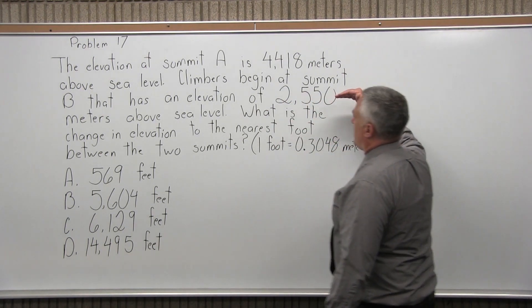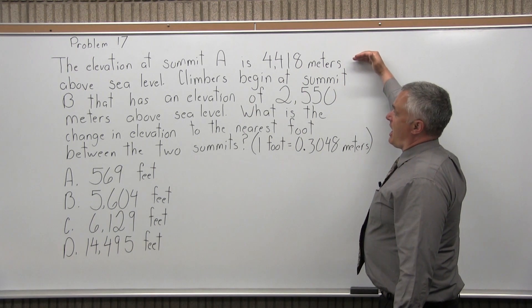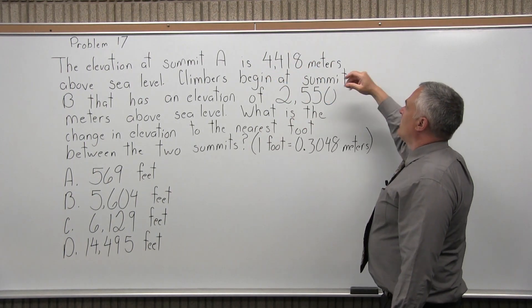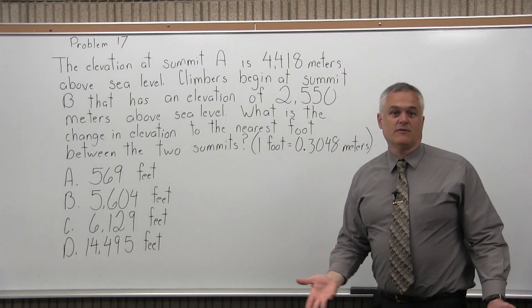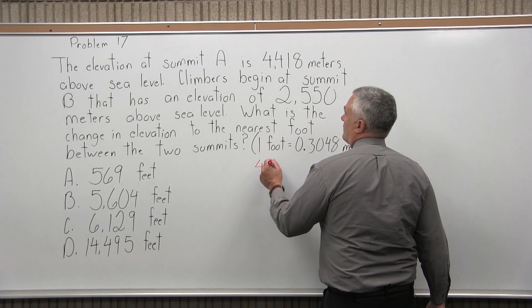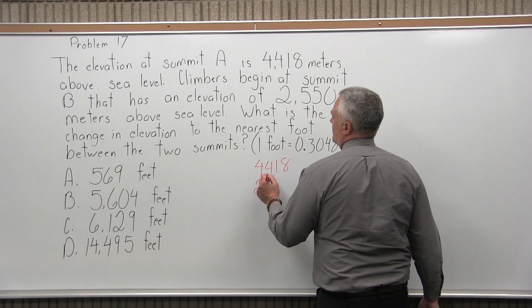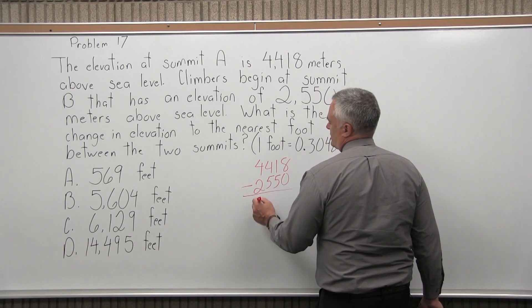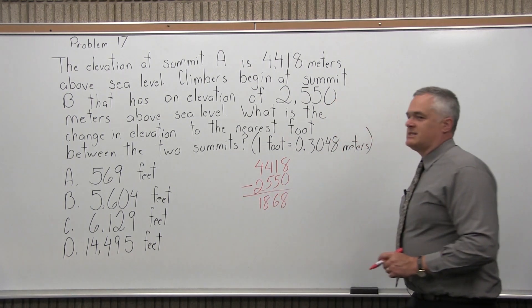So basically, you're starting from a height of 2,550 above sea level, and you're going to climb higher to 4,418 above sea level. So, first of all, how many more meters does it take to get from 2550 to 4418? To find that answer, you can subtract the two numbers.